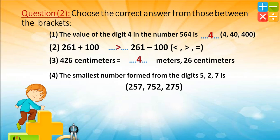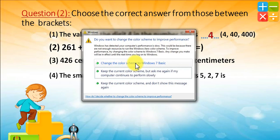The smallest number formed from the digits 2, 5, and 7 is 257. Well done!